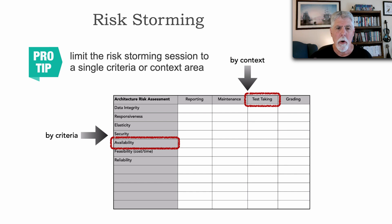Or you may say, today we're going to do a risk storming for all of these categories in test taking. And so this, by criteria, by context, is a smart way of reducing the scope of these risk storming sessions.